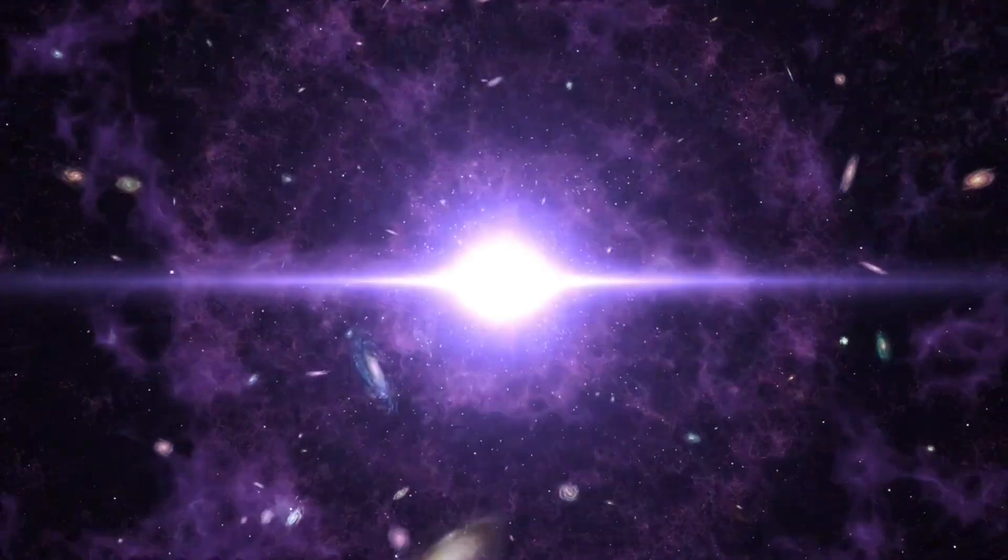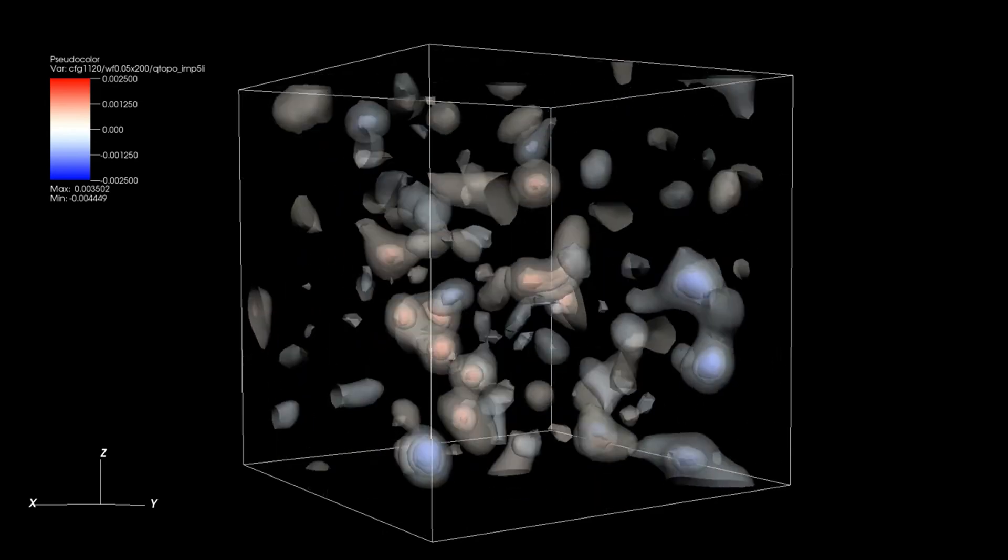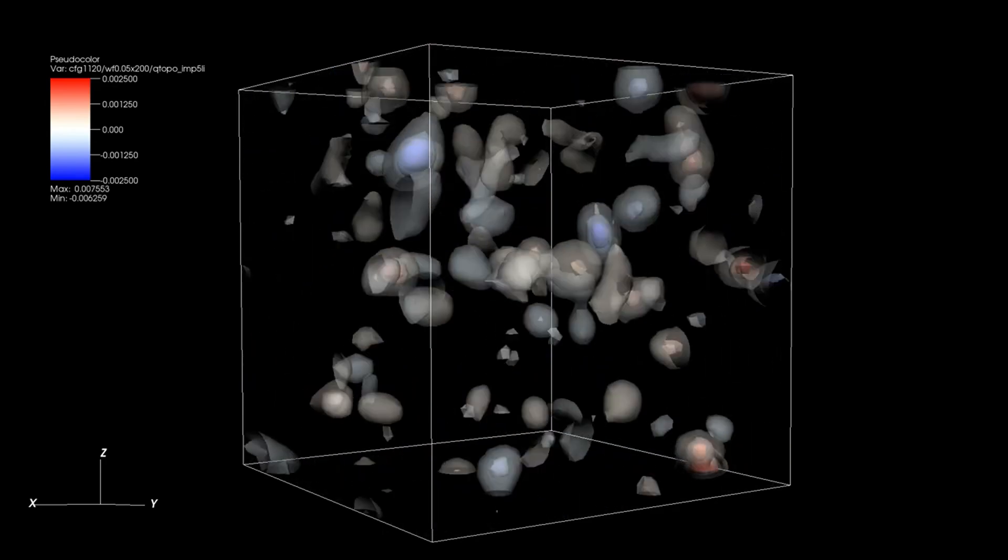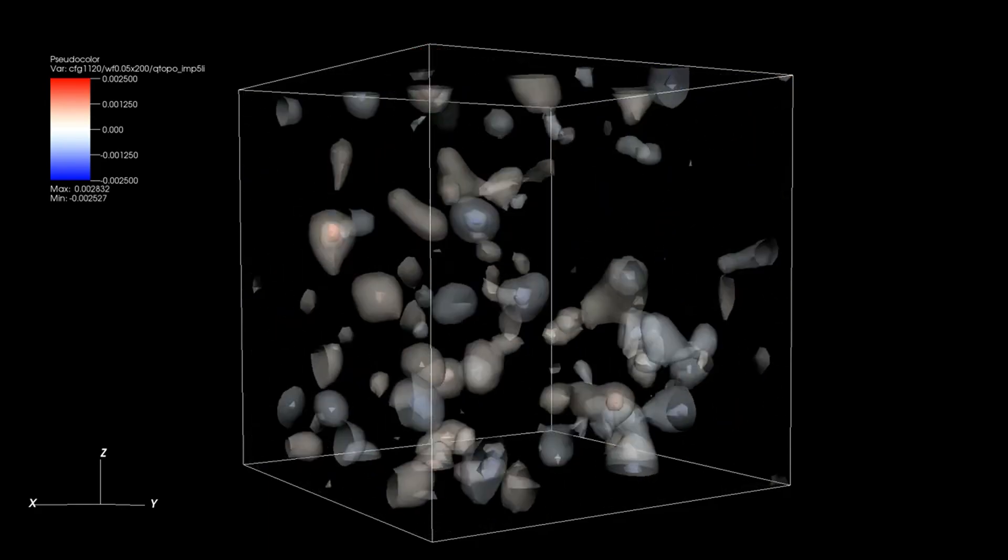Although this universe was uniform in density, there were still small variations in spacetime itself due to quantum mechanics effects. These subatomic density fluctuations of the initial set of quantum particles began to stretch as the universe expanded until they became larger than any galaxy.